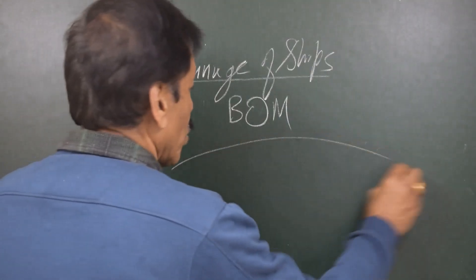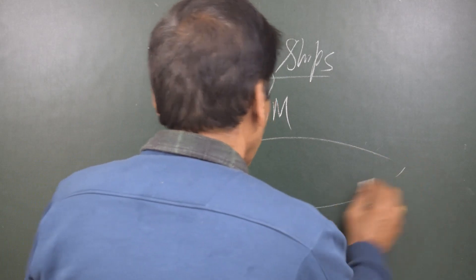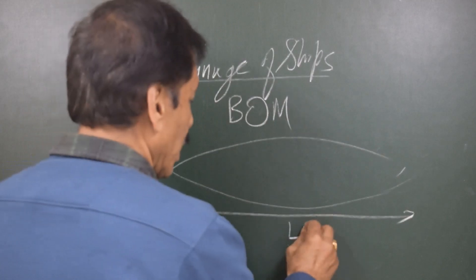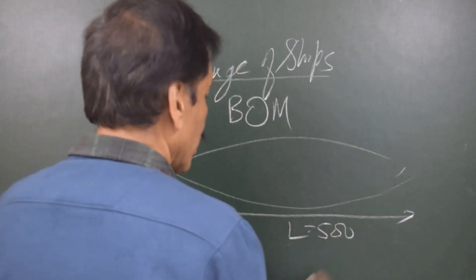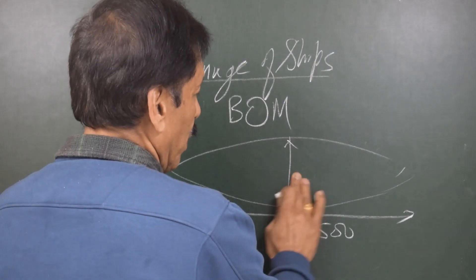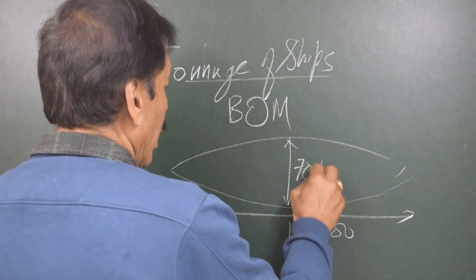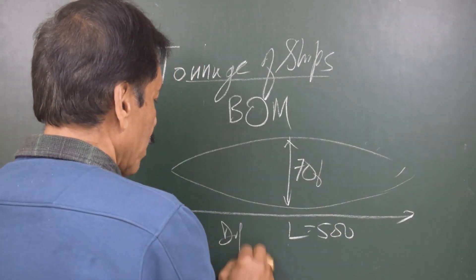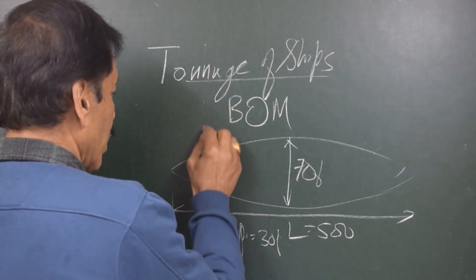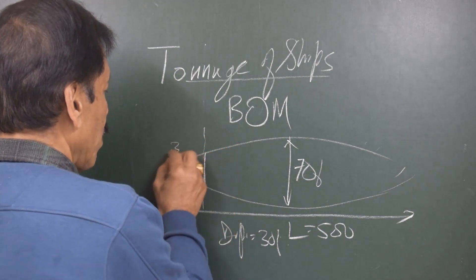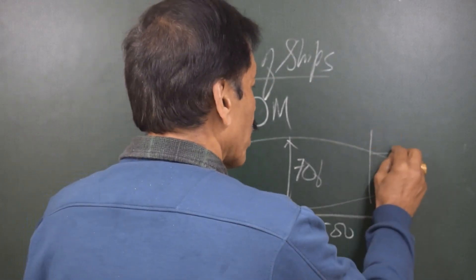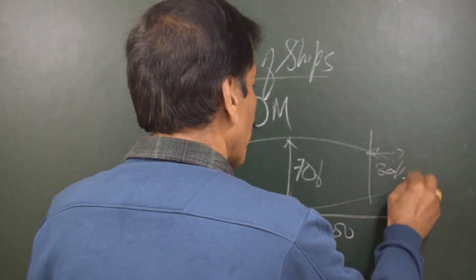So if I draw a picture just to explain this concept, suppose this is the length of the vessel. Let's say the length is 500 feet and the breadth of the vessel is 70 feet and the draft is about 30 feet. Now if we leave this portion which is 30% of the breadth over here, and we also leave this portion, that is 30% of the breadth here.